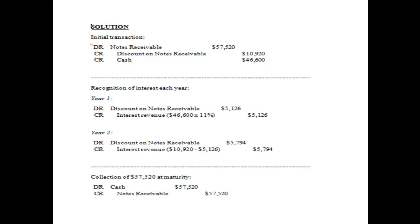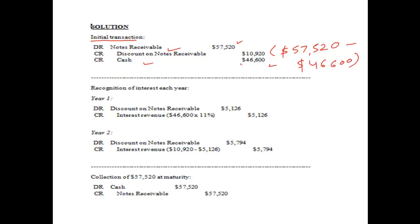First, we will book the initial transaction. Notes receivable will be debited with $57,520, that is the face value of the note. Cash will be credited with the amount lent, that is $46,600, and the discount on notes receivable will be credited with the difference between the two — $57,520 minus $46,600 — which comes out to $10,920.